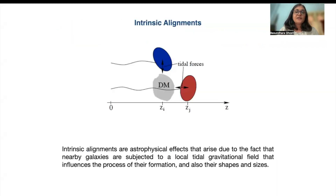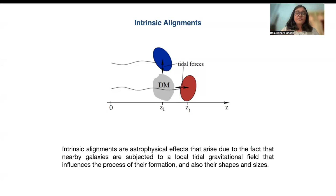I want to start by giving an overview of what intrinsic alignments are. Intrinsic alignments are astrophysical effects that arise due to the fact that nearby galaxies are subjected to a local tidal gravitational field that influences the process of their formation and also their shapes and sizes. Intrinsic alignments are understood to be a contaminant on top of weak lensing signals, which act at a distance and are integrated effects, unlike intrinsic alignments which are local effects.